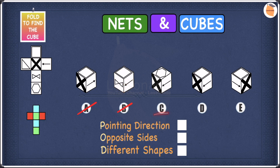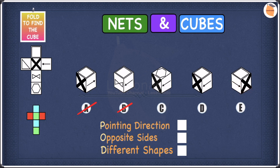In C the arrow is pointing towards the X shape, so that's fine. In D the arrow is once again pointing towards the X shape, so D is also fine. In E the arrow is pointing towards the X shape, so E is also fine. Out of the five options we managed to cross off A and B, leaving us with C, D, and E.